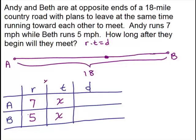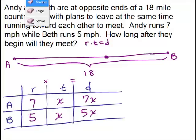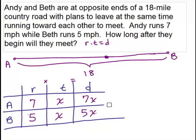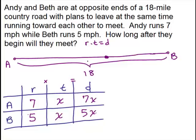The formula is rate times time equals distance, so we just multiply to get the distance for Andy, 7 times x is 7x and Beth, 5 times x is 5x. We could take and now we go up to the picture and we're going to put the distance where we're representing it up here.